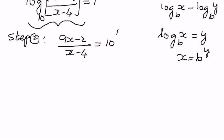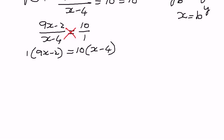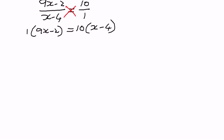Now we can simplify. Since 9x minus 2 divided by x minus 4 equals 10 to the power of 1, that means 10, we can write that as 10 divided by 1. We can cross-multiply these terms and then find the value of x. So: 1 times (9x minus 2) is equal to 10 times (x minus 4). The only unknown quantity here is x, so we distribute the 1 and the 10 to each term inside their respective parentheses.